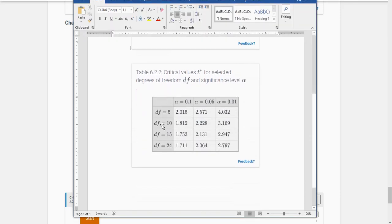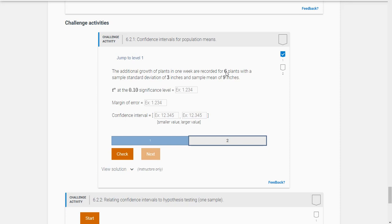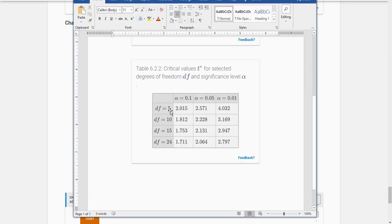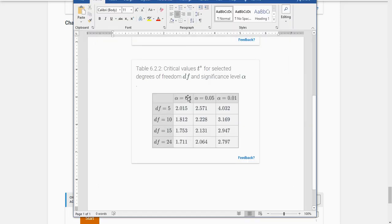It says find t star at the 0.10 significance level. Whenever you're given the sample standard deviation, you're going to use this chart here. Degrees of freedom are the sample size minus one. So there were six minus one, gets me five degrees of freedom. And it wanted 0.10. So that's right here. My critical value is going to be 2.015.